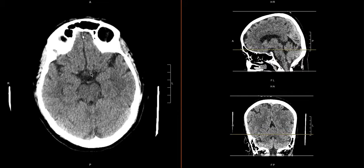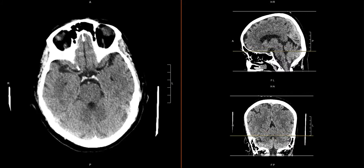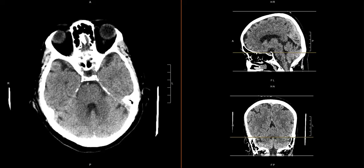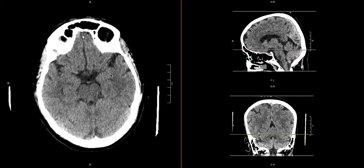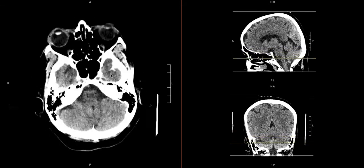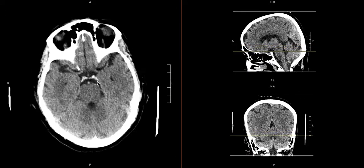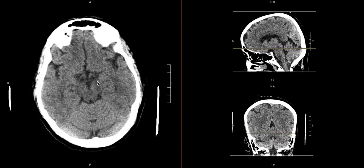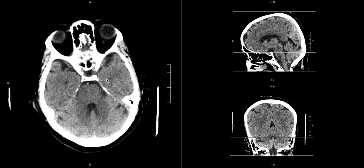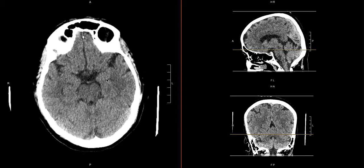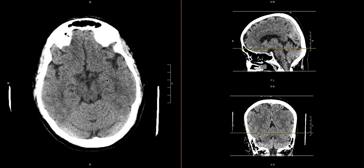Here we have the star appearance of the suprasellar cistern — this vague density in here is the optic chiasm, and as we go a little bit lower we'll get the sella, which we can also evaluate on our sagittal view. Another important structure to look at is the interpeduncular cistern, which is best seen around this level — it's the area between the anterior portions of the midbrain where blood can settle, so you want to look for that as you scan through.